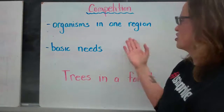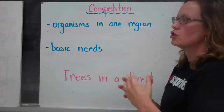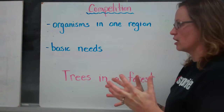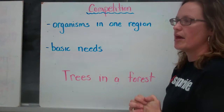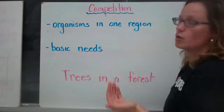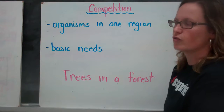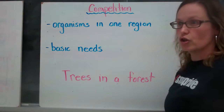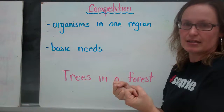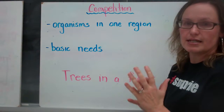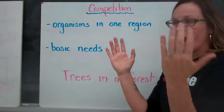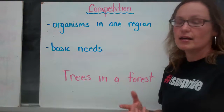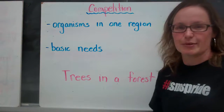The last interaction is competition — where in one region two or more organisms are competing for the same basic need. Again, there's this idea of balance, and if there isn't a balance, some of the organisms will die off. An example would be trees in a forest. Tall trees compete for sunlight as a basic need, growing upward to get it. Smaller or less mature trees are also competing for that sunlight, and if overtaken by a larger tree, they don't receive that basic need and eventually die. That's what competition looks like in an ecosystem. Thank you.